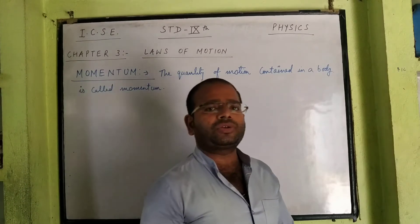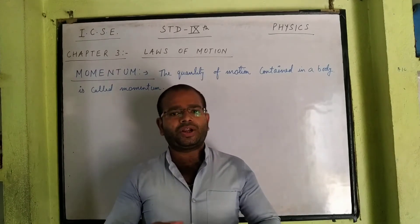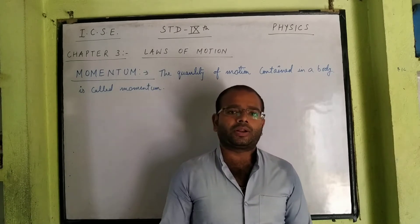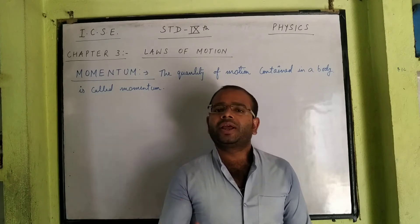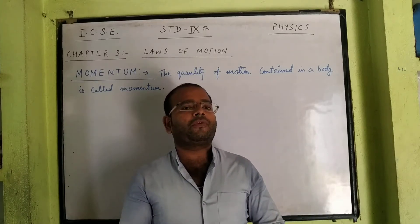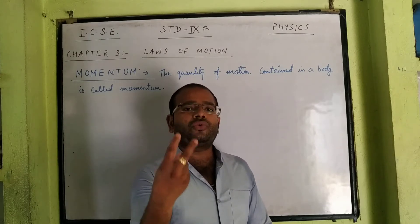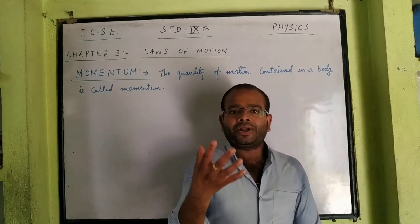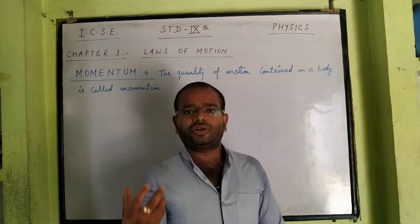How can the amount of motion in a body be determined? If we want to measure the quantity of motion contained in a body, it depends upon two factors. The first factor is the velocity of the body, and the second factor is its mass. That is why if we want to find out how much motion is contained in a body, it is given by these two factors: mass and velocity.